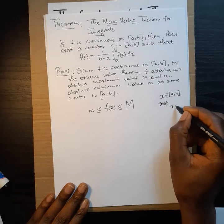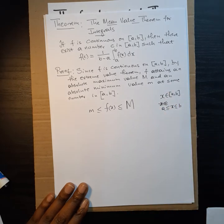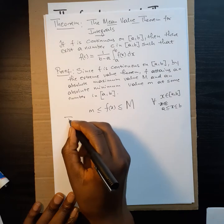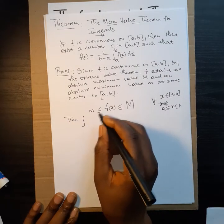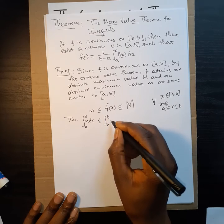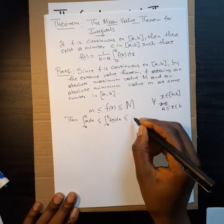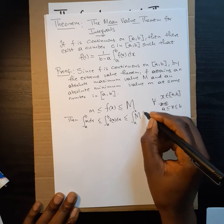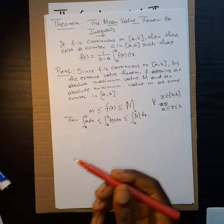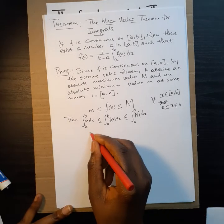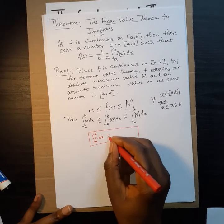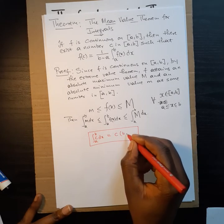Since m ≤ f(x) ≤ M for all x in [a, b], we can integrate across the interval: the integral from a to b of m dx ≤ the integral from a to b of f(x) dx ≤ the integral from a to b of M dx. Using the property that the integral of a constant c over [a, b] equals c times (b minus a), we get m(b − a) ≤ integral of f(x) dx ≤ M(b − a).